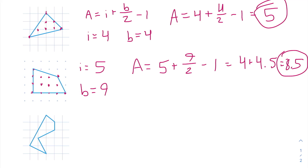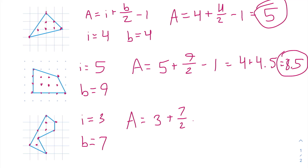Now we are going to move on to the final polygon. First, we need to find the number of lattice points on the interior. There are 1, 2, 3 lattice points on the interior, so i is equal to 3. And there are 1, 2, 3, 4, 5, 6, 7 lattice points on the perimeter of our polygon, so b is equal to 7. This means the area of our polygon is equal to 3 plus 7 over 2 minus 1, which is 2 plus 3.5, which is 5.5.